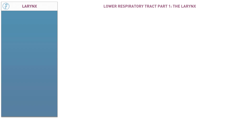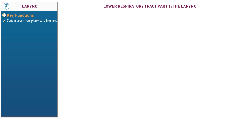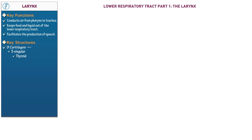To begin, start a table to address laryngeal functions and anatomy. Note that its three key functions are: it conducts air from the pharynx to the trachea, it prevents food and liquid from entering the lower respiratory tract, and it facilitates the production of speech. Its complex cylindrical anatomy encompasses three singular cartilages — thyroid cartilage, cricoid cartilage, and the epiglottis — and three paired sets of cartilages: the arytenoid cartilage, corniculate cartilage, and cuneiform cartilage.